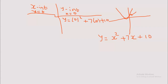So y equals 10 for the y-intercept, and since x must be 0, the coordinate is (0, 10). That is the y-intercept coordinate. Then for the x-intercept, wherever you see y you put 0. So: 0 equals x squared plus 7x plus 10. We're going to factorize to get the two x values. If you're uncomfortable with factorizing, use the quadratic formula — it just requires a, b, and c — and the formula will give you the two x values.